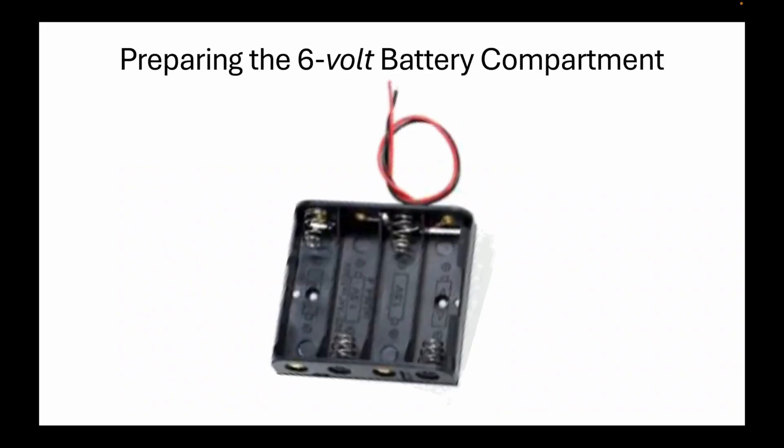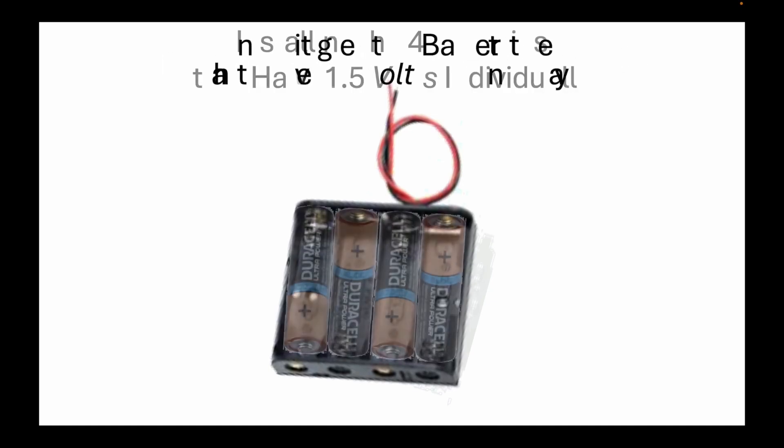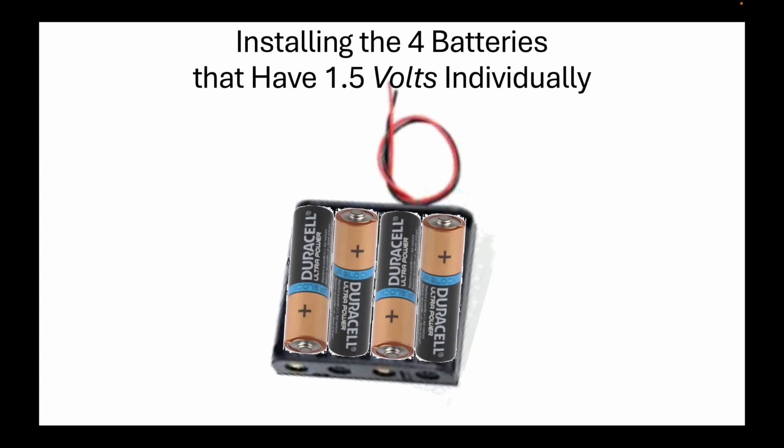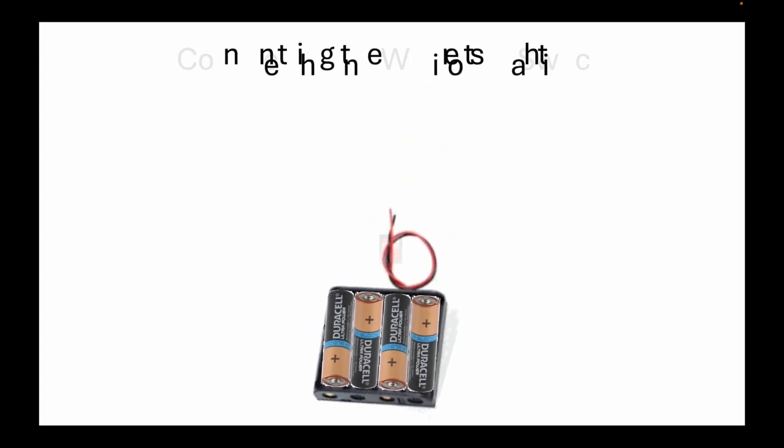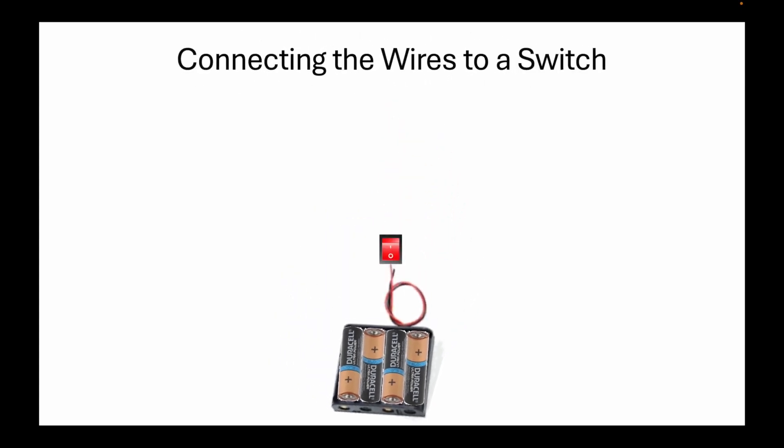First, we should prepare the battery compartment that will house a total of 6 volts using four 1.5 volt batteries. We should connect this power supply to a switch so that no matter the position of the potentiometer, both propellers will remain off.